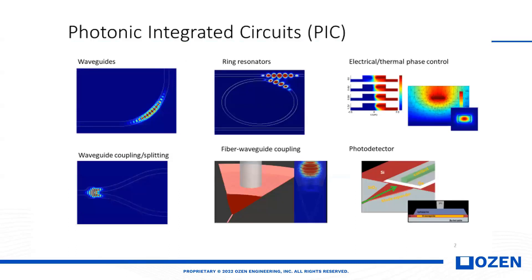In a photonic integrated circuit, as you see here, we have a waveguide, ring resonator, phase modulator, splitter, different coupler, photodetector, and lasers. But the waveguide is a main part of the photonic integrated circuit.